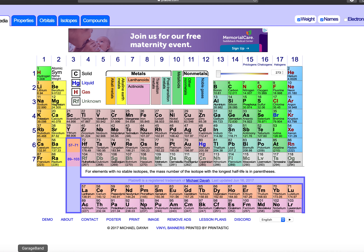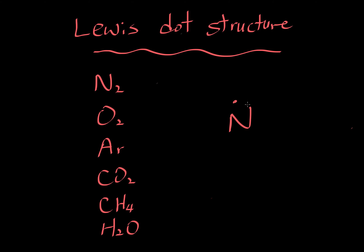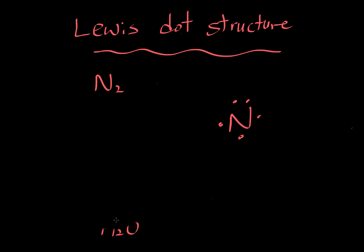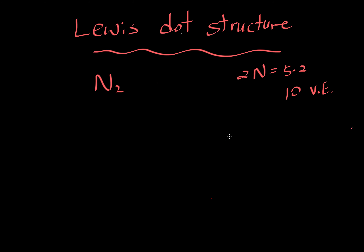So you would see one, two, three, four, five valence electrons — the outermost electrons. So let's go ahead and draw our nitrogen. We know that nitrogen — each nitrogen has five valence electrons, but you have two of them, so you multiply by two. So in total, we have 10 valence electrons to work with.